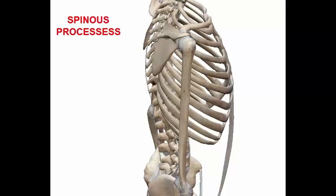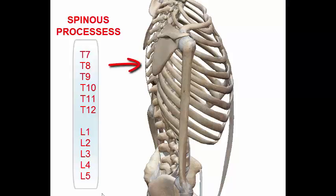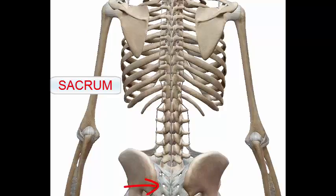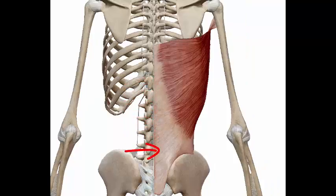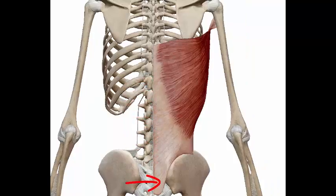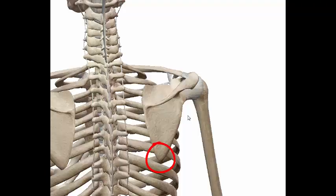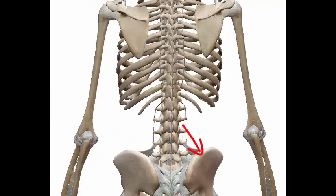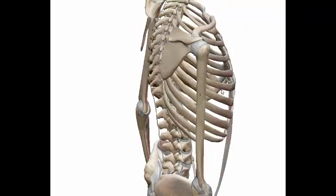The latissimus dorsi originates from the spinous processes of T7 to T12, from L1 to L5 and the sacrum, the thoracolumbar fascia, the inferior portion of the scapula, the posterior iliac crest, and ribs 9 to 12.